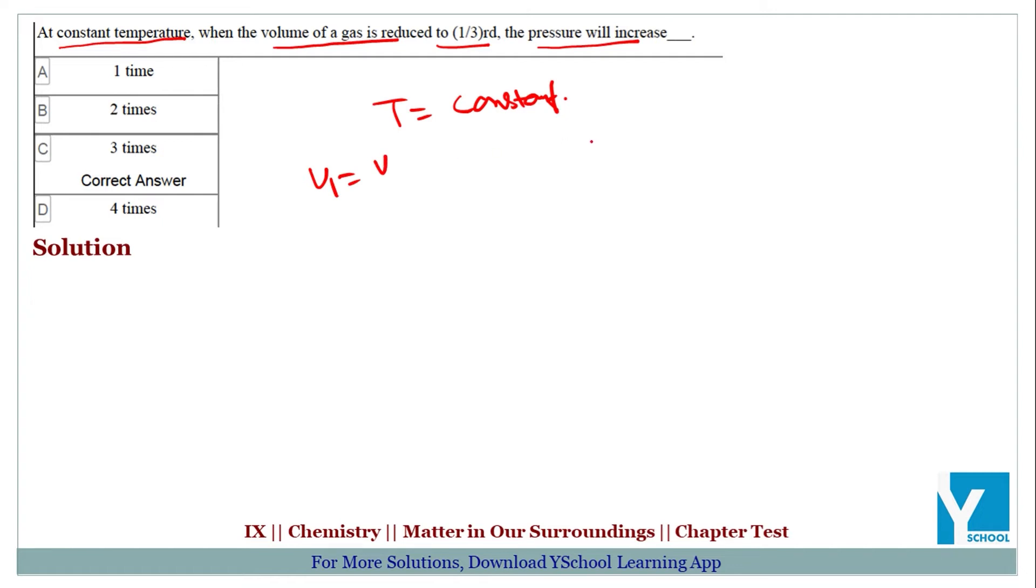Let's say V1 was V and V2 becomes V/3. The pressure, let's say P1 was P. P2 hamain find out karna hai.